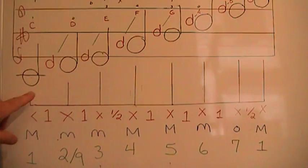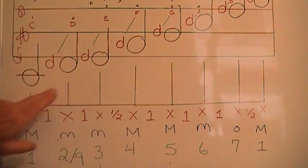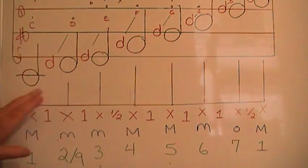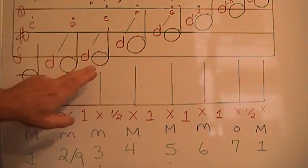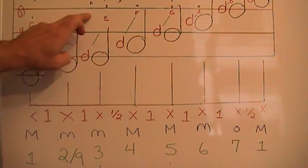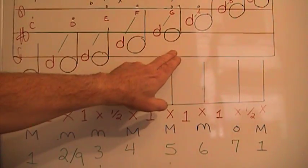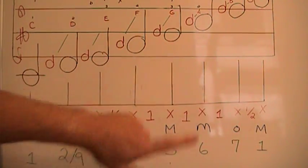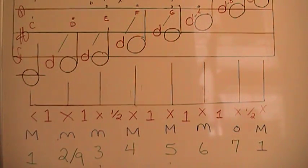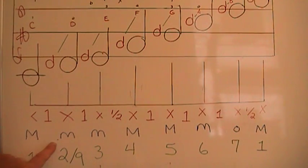This is a major triad in the key of C. If we flat the E, we'll have a minor third, so we'll have a root, a minor third, and a fifth — we have effectively built a minor chord. The number system uses C to measure the distance from one note to the next or one chord to the next along the diatonic chord path, which is quite simple.